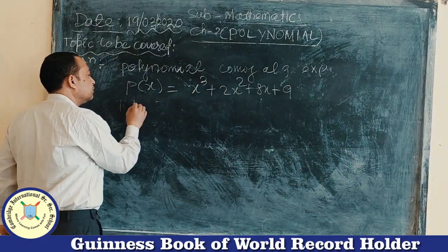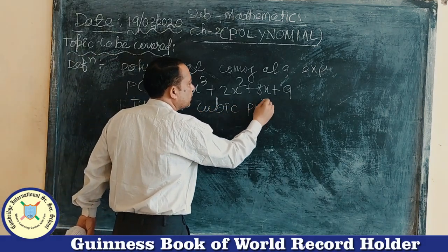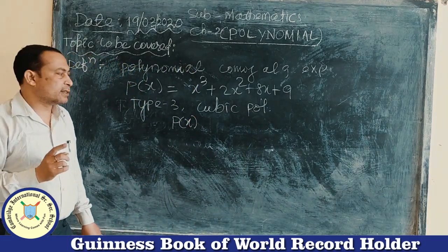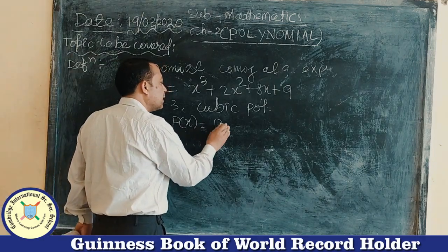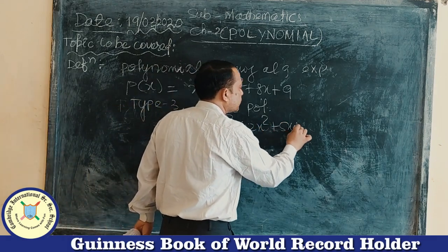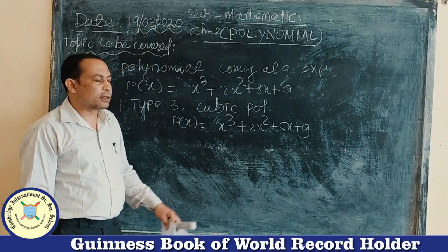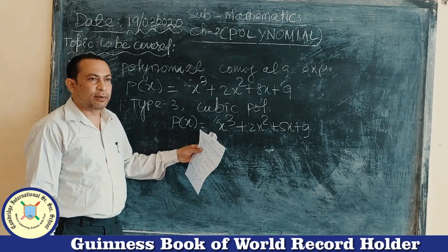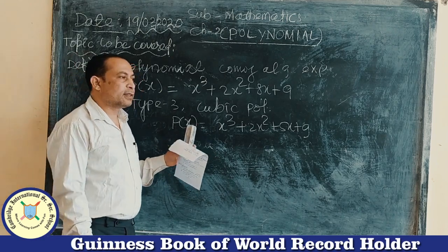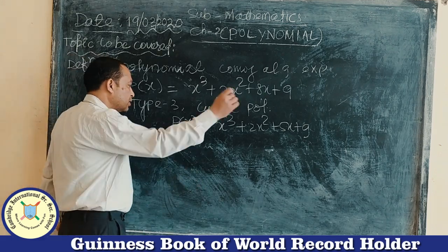Next, Type 3: Cubic Polynomial. The cubic polynomial is one whose degree is 3. For example: 6x³ + 2x² + 5x + 9. The highest power of the variable here is 3, so it is called a cubic polynomial. When this polynomial is solved, we get 3 zeros — that is alpha, beta, and gamma.